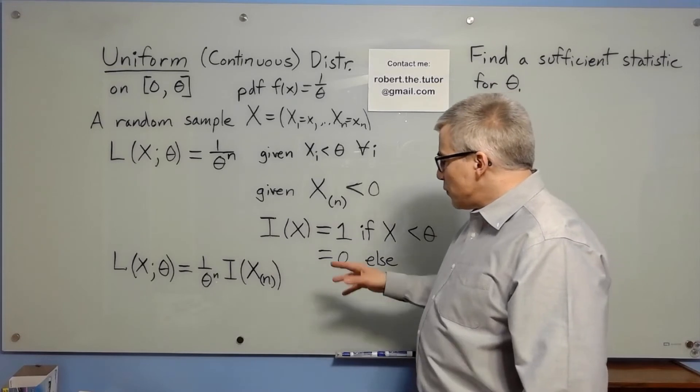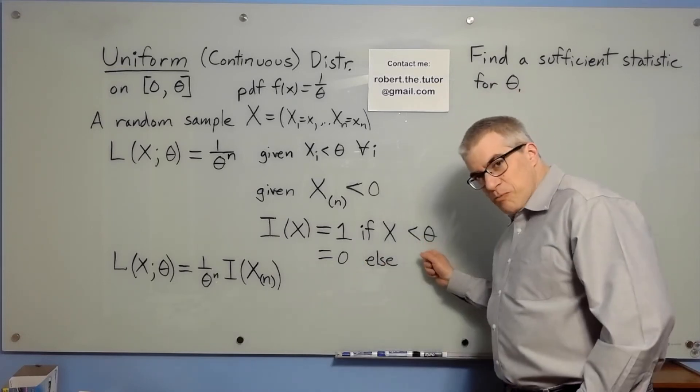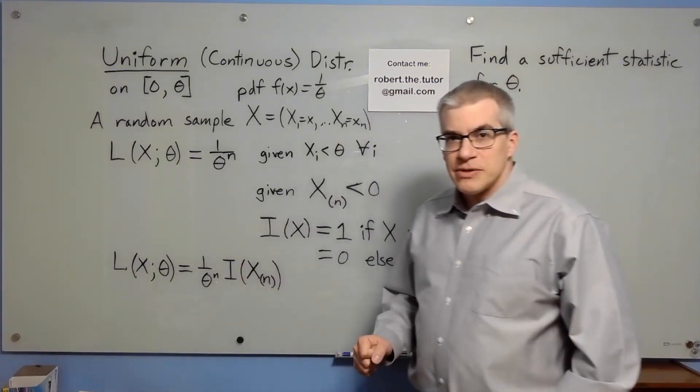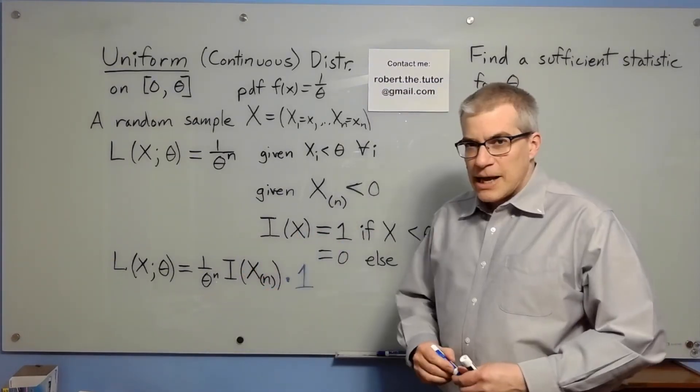All right, well the indicator function for xn still has theta buried inside it, right? It depends on theta. So we haven't managed to factor out all the thetas. But here's the trick. Now we've factored it.